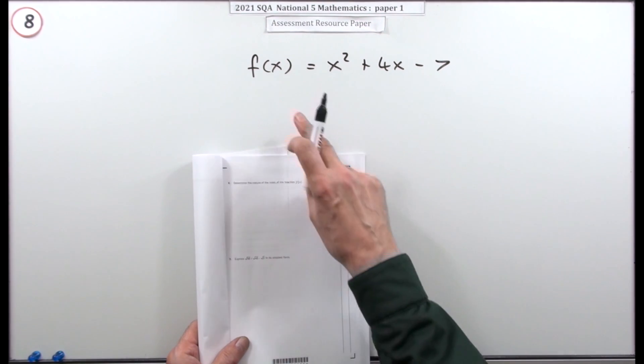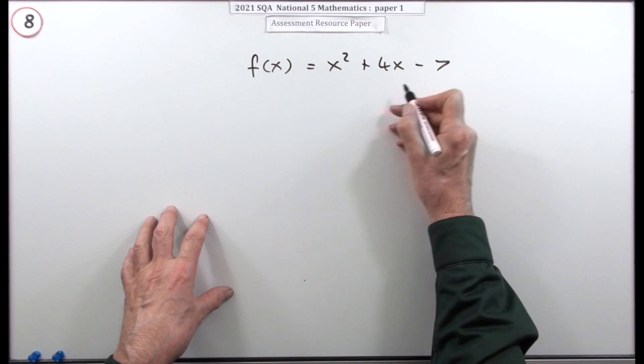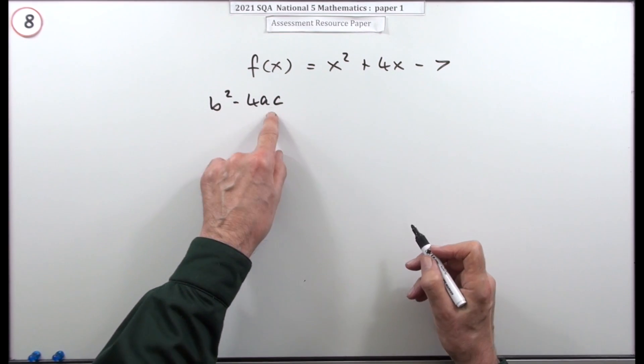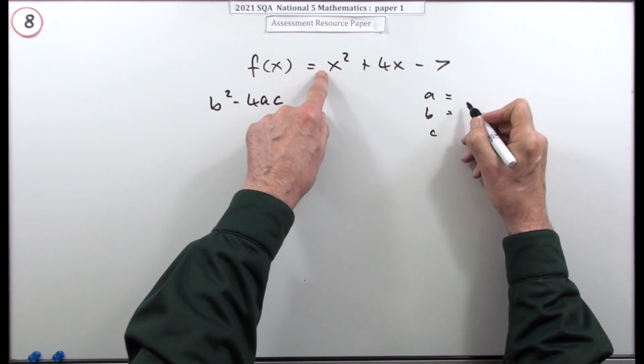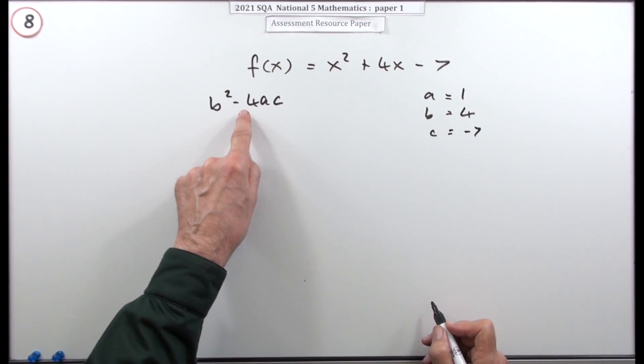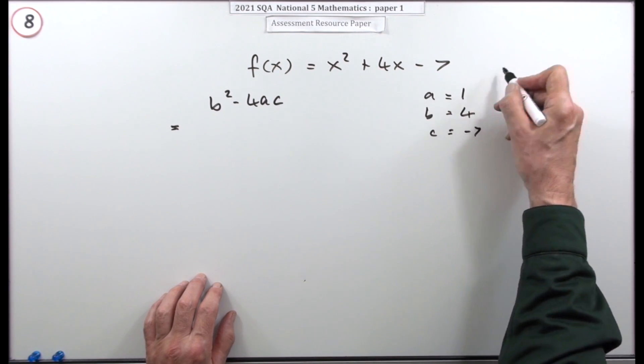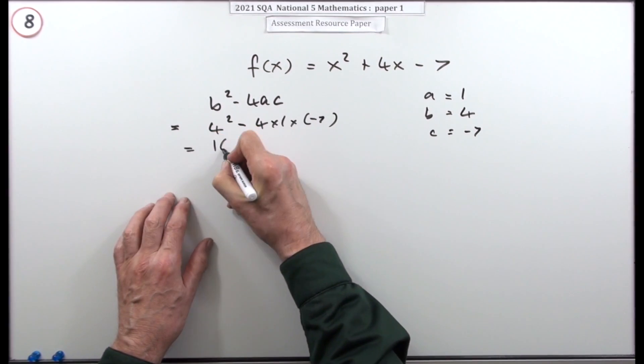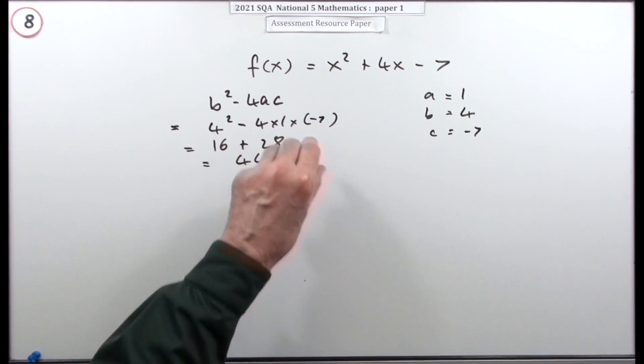So in number eight it says determine the nature of the roots of this function here for two marks. Well it's a quadratic, so the discriminant will tell you, which means in this case we'll want the discriminant. So you want b squared minus 4ac, where the a, the b, and the c are the coefficients of the x squared, the x, and the number. You can always put a wee note at the side. So a is the coefficient of x squared, that's one, b is the coefficient of x, that's four, and c is the number on its own, so that's negative seven. So if you put it into this, this will tell you what kind of answers to expect if that was the equation equal to zero. So b squared, so that's four squared, take away four times one times negative seven. So that's 16 plus 28, which is 44. Now getting the 44 is one mark.